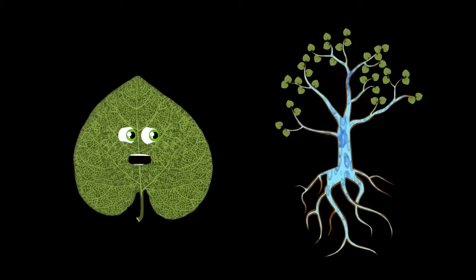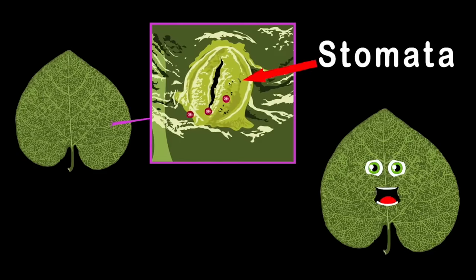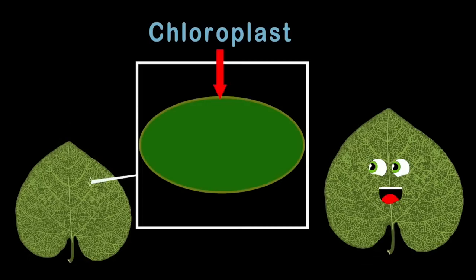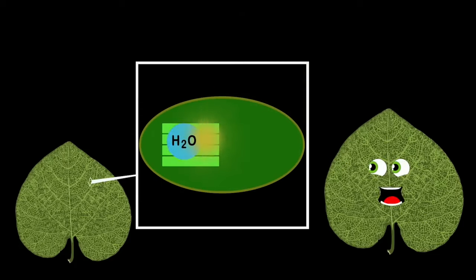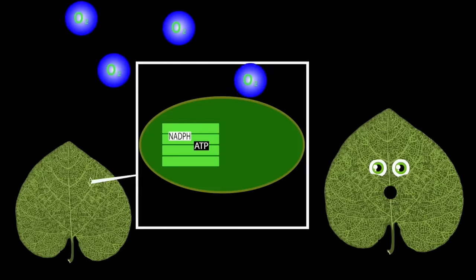When plants suck up water through their roots and send it to their leaves, this water is used for photosynthesis, which is one part of three. Carbon dioxide is the second part, which plants breathe through their stomata, found on the outside of their leaf. Then the photons from sunlight are absorbed into chloroplasts, where the chemical reaction happens. Thylakoids take water and sunlight, creating NADPH and ATP as energy, and the waste is oxygen released for you to breathe.